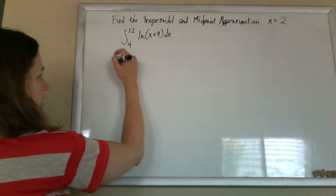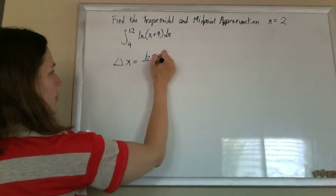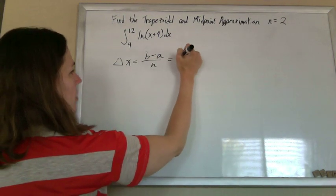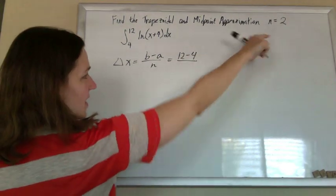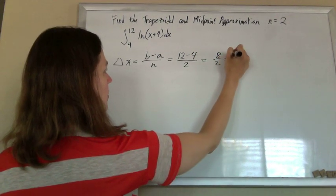Alright, so first things first, we're going to find our delta x. So delta x is b minus a over n, so 12 minus 4. In this case, the n is just 2, so that 8 over 2 is 4.